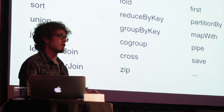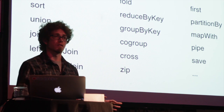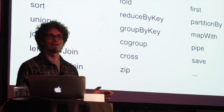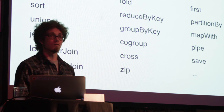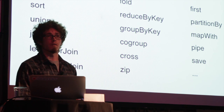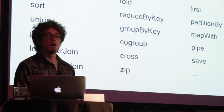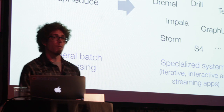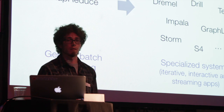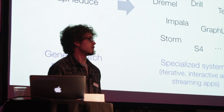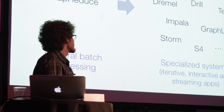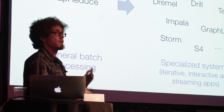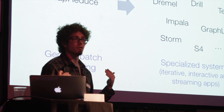This is the basic core abstraction of Spark — these distributed parallel collections that you can operate on. This is a really good fit for a lot of problems, but there's a wide variety of tasks that people want to do with data. You may have batch processing, but you may also want to do more specialized things.